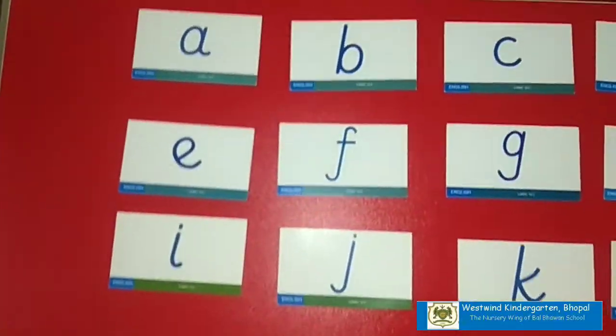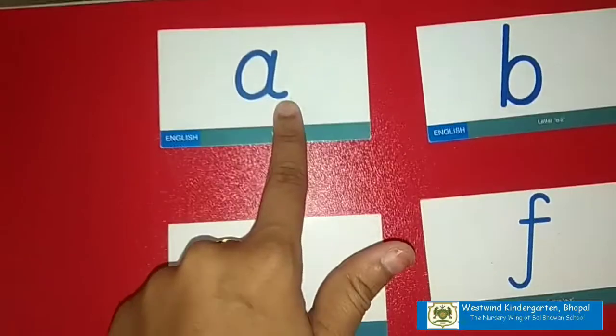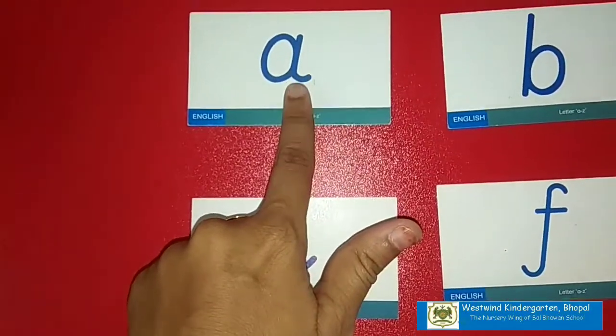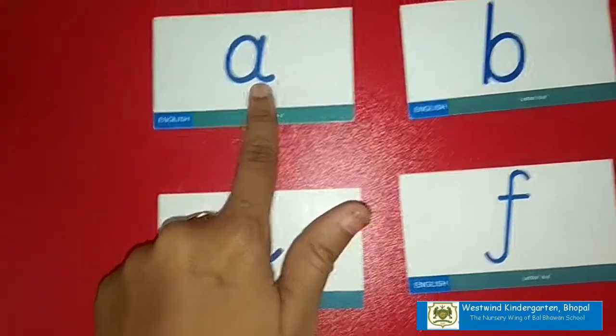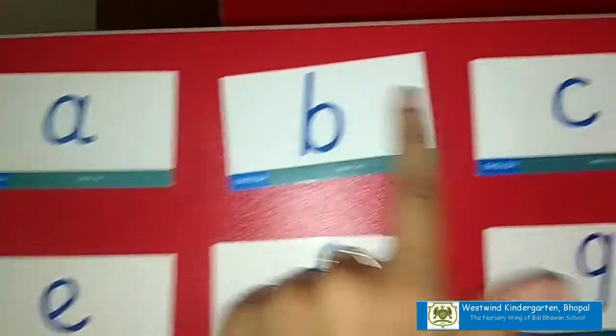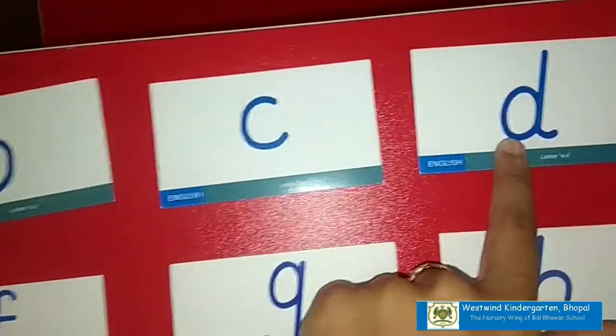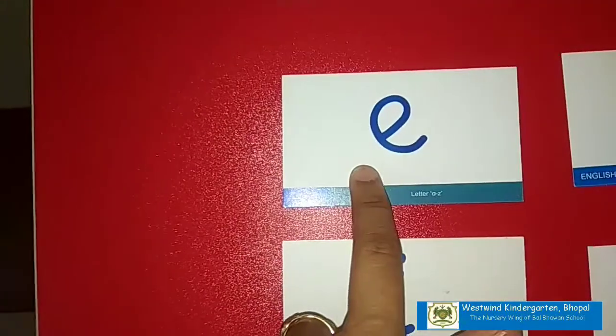Now again, let's recap the sounds. A, sound of letter A is A. B is B. C is K. D is D. E is A.